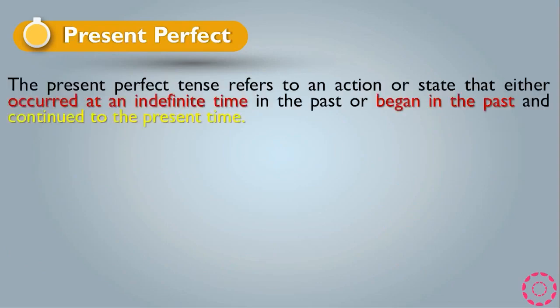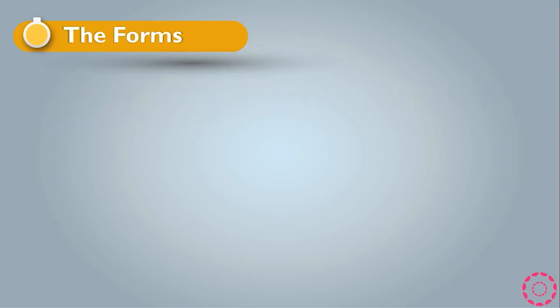The present perfect tense refers to an action or a state that either occurred at an indefinite time in the past, or began in the past and continues to the present time. This is the present perfect tense.